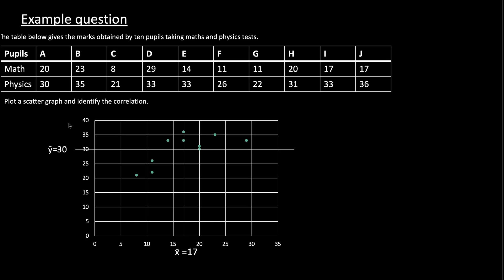This indicates a positive correlation exists between X and Y. So in other words, it implies there is a positive correlation between the score obtained by pupils in maths and physics. Thank you for watching the video, please do consider subscribing.